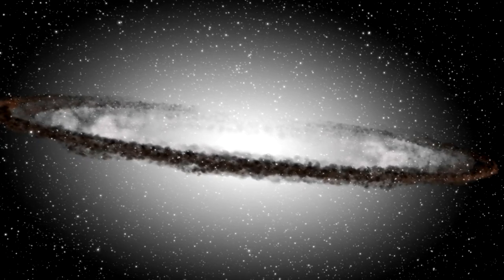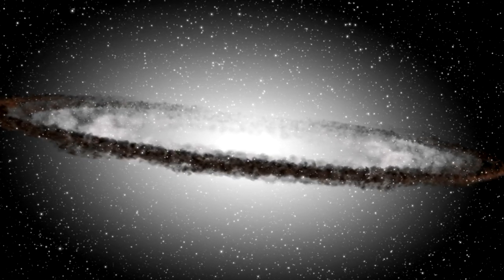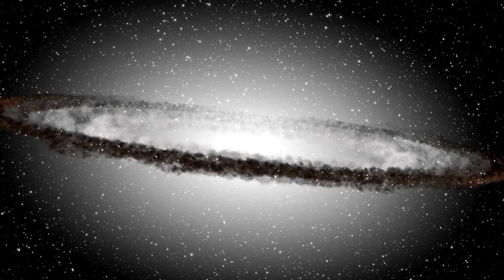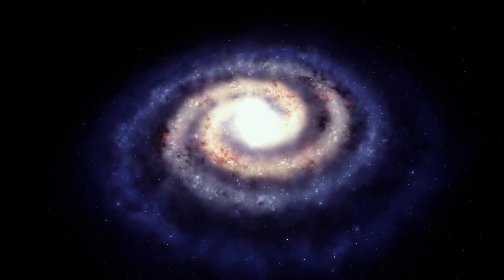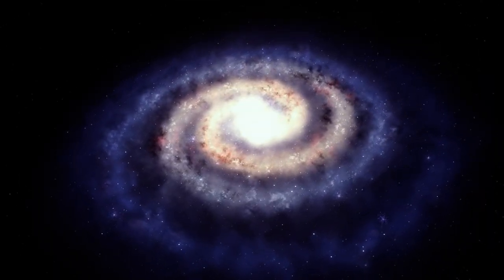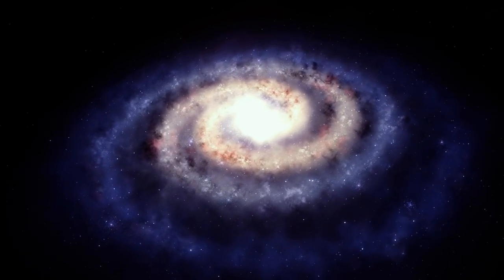The Sombrero Galaxy, also known as M104, is located about 28 million light-years away from Earth in the constellation of Virgo. It is named after its resemblance to a Mexican hat, with a bright central bulge and a dark dust lane around it.